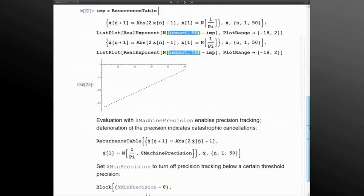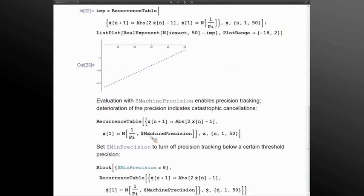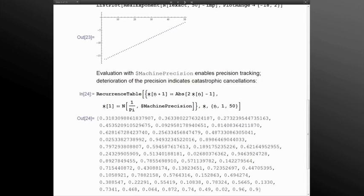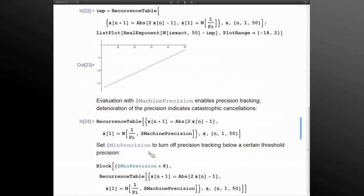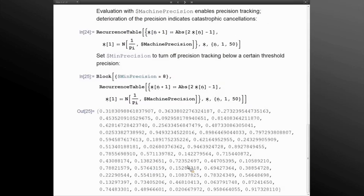When we will repeat this computation with dollar machine precision, by doing so we enable precision tracking. We will see that the precision of the numbers become smaller and smaller and ultimately in the end we only get one correct decimal digit. We can use dollar min precision to turn off precision tracking below a certain value.